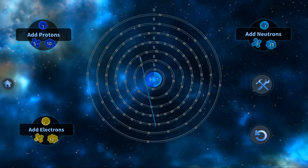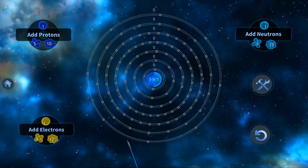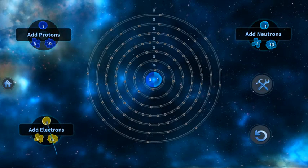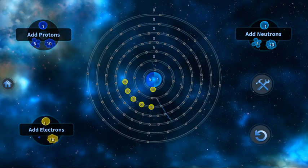Notice how there are different levels, or rings, for electrons? That is so you can add a different number of electrons to different levels around the nucleus.